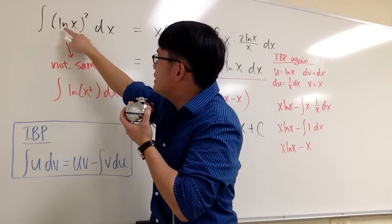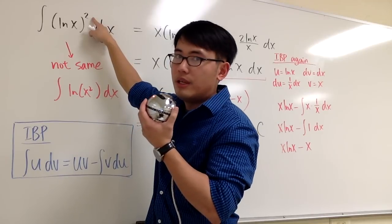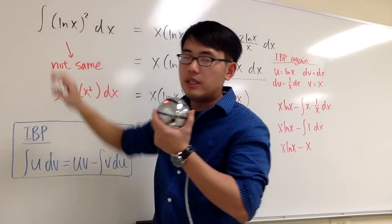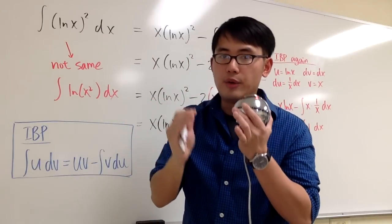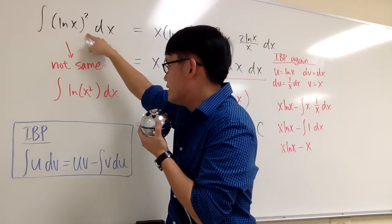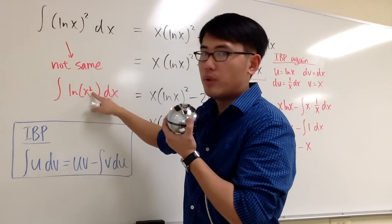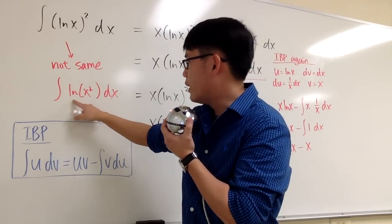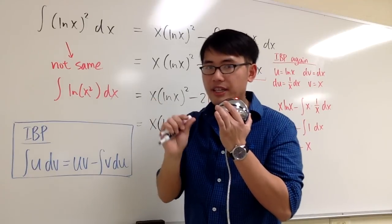We are going to integrate (ln x)². Notice that this notation means we are going to have ln x times ln x. This notation is not the same as saying ln(x²). This means we have ln and then x times x inside the parentheses.